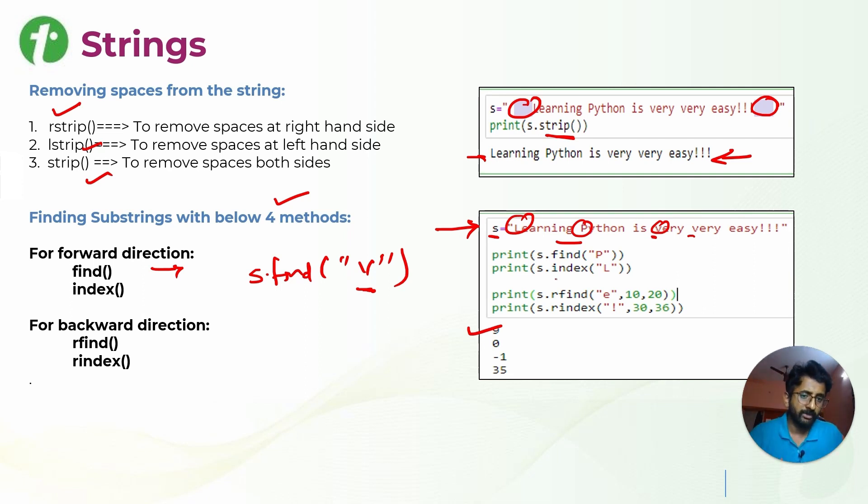Second one is index function. Index function will tell at what index this particular word or character is present. For example, L is present at 0th index. So whenever you are doing index, it will give output as 0. Similarly, you can do it inside a range, like checking E between 10 to 20.